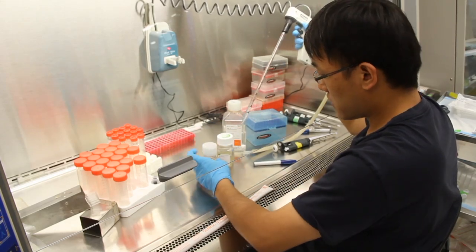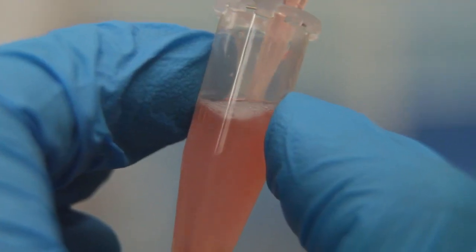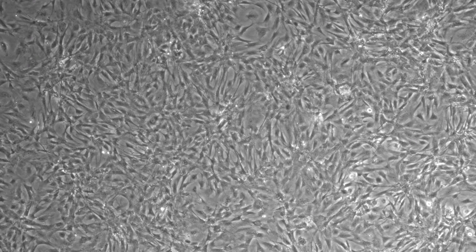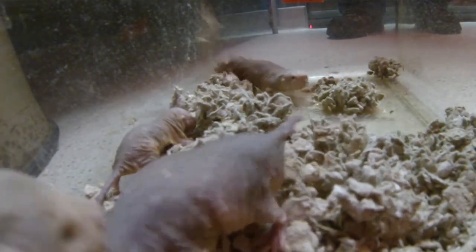To test this hypothesis, they genetically engineered naked mole rat cells that couldn't produce hyaluronan. All of a sudden, the cells lost their claustrophobia. And when they fed those cells cancer-causing proteins, voila, they were forming tumors. This really proved that hyaluronan is the key for cancer resistance.